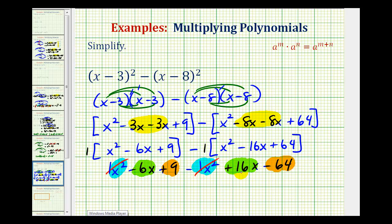And then for the x terms, this is negative six x plus 16x. Since negative six plus 16 is 10, this would be 10x. And then we have nine minus 64. That's going to be negative 55. So we have minus 55.